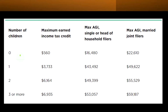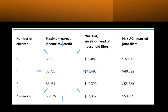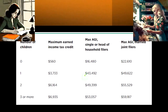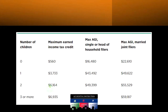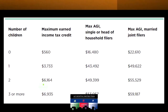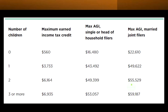For one child, the maximum credit is $3,733. The maximum AGI for single or head of household filers is $43,492, which is fairly significant — but again, that's the top level where it phases out completely, not the peak of the curve. The peak is where your AGI is maximized for the full $3,733 credit. For married filing jointly, that threshold is $49,622. For two children, the maximum credit rises significantly to $6,164, with a max AGI of $49,399 for single filers and $55,529 for married filers.